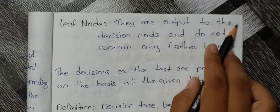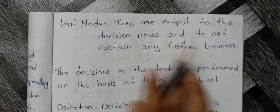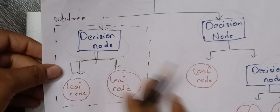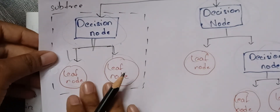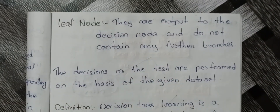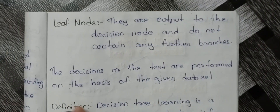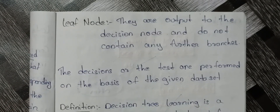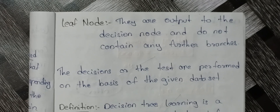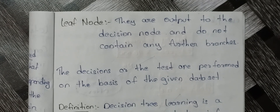Leaf nodes are the output to the decision nodes and do not contain any branches. The decisions or tests are performed on the basis of the given dataset. I will show you an example and the dataset for the decision tree.